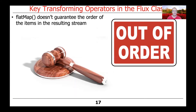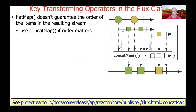FlatMap does not guarantee the order of items in the resulting stream, so elements can interleave and arrive in different orders. If order matters, use concatMap instead of flatMap. ConcatMap is a bit more expensive because it maintains order, but it's important to realize that concatMap will order things in a way that flatMap may not.